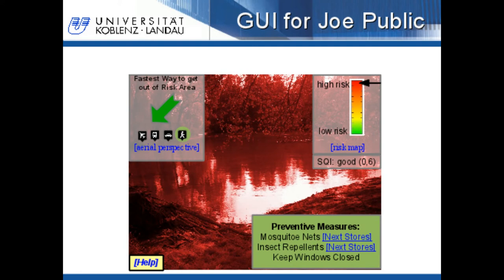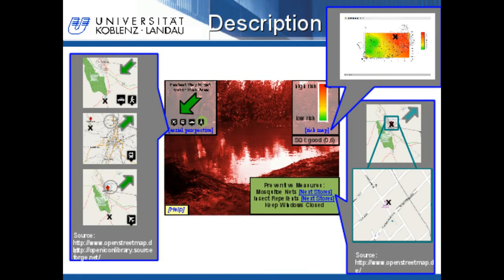At the moment, pedestrian mode is set. On this sheet the graphical user interface for Joe Public is further described. On the upper right the risk map is linked. On the lower right, the fastest way to the next doors where you can buy mosquito nets and insect repellents can be displayed, and an arrow guides you. On the upper left you can see what happens when you choose another mode than pedestrian mode. You can choose for example car mode or train mode — then you will be guided to the next train station — or plane mode, then you will be guided to the next airport.